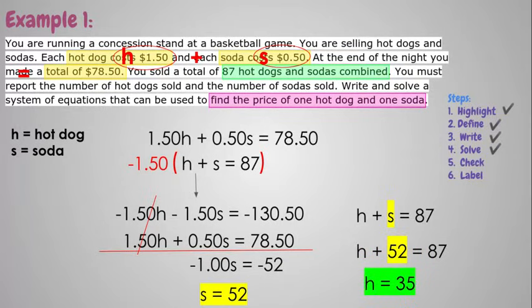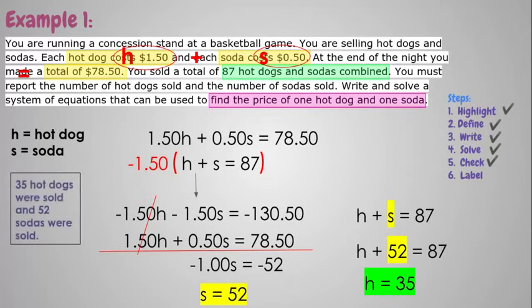So now we solved it. I'm not going to go through the check, but it's very easy to check this on your calculator. You would want to make sure that 52 plus 35 does add up to 87, which it does. And then you could take the 35 hot dogs, multiply it by $1.50, and 52 sodas, multiply it by 50 cents, and it should total 78.50, which it does. Last is to label your answer. So somewhere on your paper, you would want to write 35 hot dogs were sold and 52 sodas were sold, and that's it. So that's one type of problem that comes up often in terms of the way it's set up.